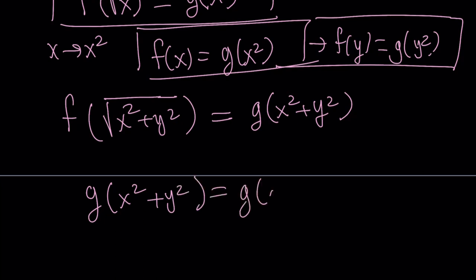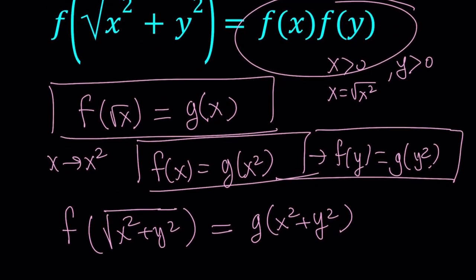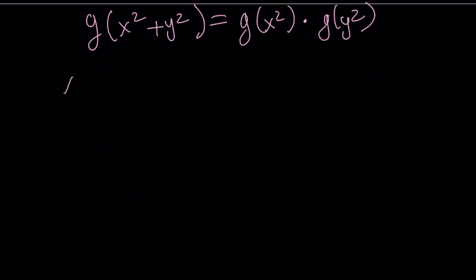I can replace f of x with g of x squared and f of y with g of y squared. The left-hand side becomes g of x squared plus y squared. And the right-hand side is going to become g of x squared times g of y squared. This is nice because hopefully it looks like something we know. I'm going to use more substitution here. I'm going to set x squared equal to z and y squared equal to w.